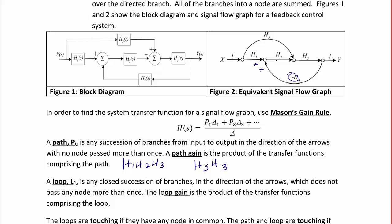For Figure 2, an example of a loop would be H2, H3, times negative H4. So we can write that as negative H2, H3, H4.